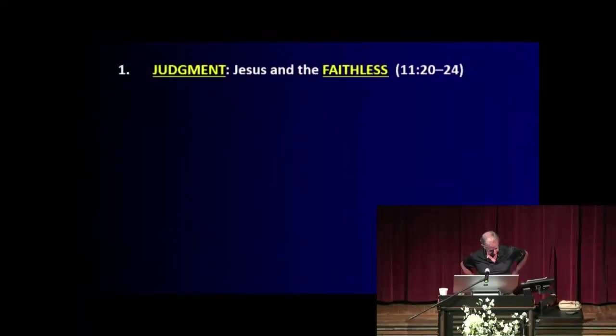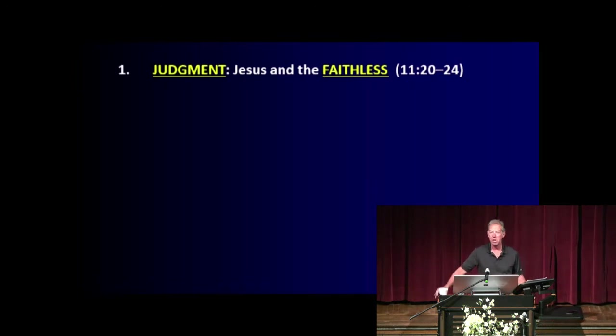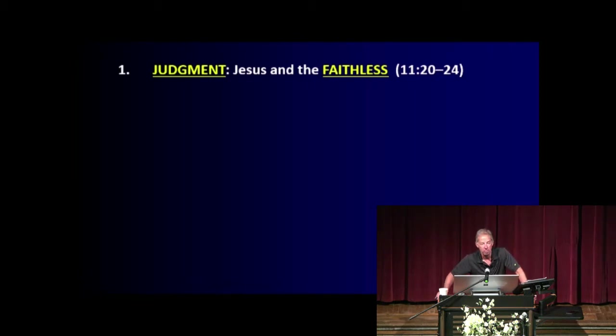In Matthew chapter 11, verses 20 through 30, we see Jesus Christ talking about three different kinds of people. First, he's pronouncing judgment on the faithless. He had been walking around the countryside — Chorazin, Bethsaida, Capernaum — doing miracles, but people did not get saved and rejected him. He's saying it's going to be worse for you than for those other past-judged cities because you have more truth. There is a level of accountability with God: the more truth given to the unsaved, the greater the judgment.